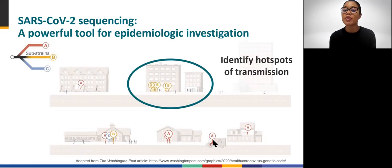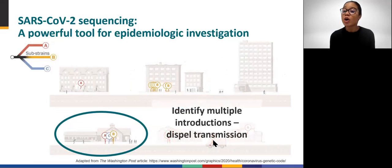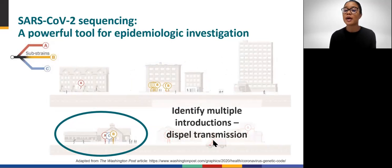With this technology, public health investigators can identify hotspots of transmission. In this cluster of cases circled here, all have the same substrain, which provides evidence for localized transmission. Public health investigators can also use genome sequence data to rule out transmission within an apparent cluster. In this example, we see a school where different substrains of SARS-CoV-2 have been found among ill children, suggesting that children are not being infected at school but are rather acquiring SARS-CoV-2 in the community.